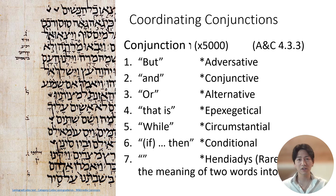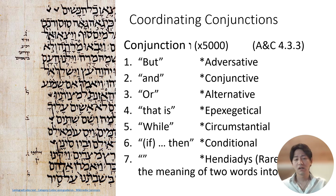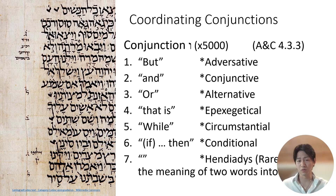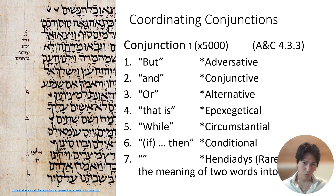Here are the seven ways that the coordinating conjunction vav can be translated or function within a sentence: first, 'but' (adversative); second, 'and' (conjunctive); third, 'or' (alternatives); fourth, 'that is' (apexegetical); fifth, 'while' (circumstantial); sixth, 'then' (conditional, as in an if-then clause); and seventh, hendiadys — where two words are conjoined into one specific phrase through the use of vav, which doesn't have one consistent translation.